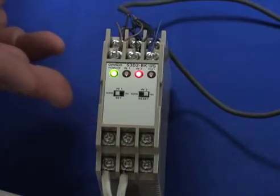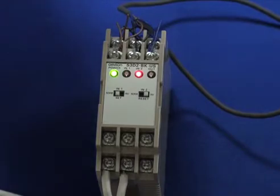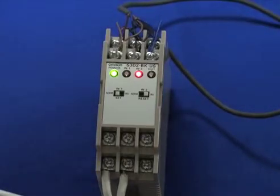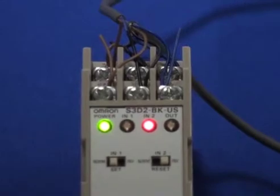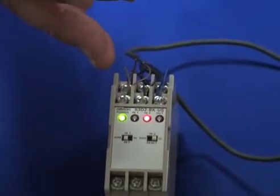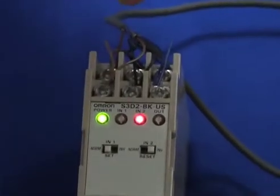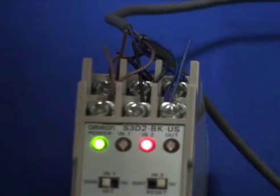In this particular version, the S3D2-BK requires the use of two sensor inputs. In this case we have two NPN style output proximity sensors wired into this unit, and this only operates with NPN style sensor inputs. You simply connect your black, your blue, and your brown wires accordingly to your plus, your minus, and your input.